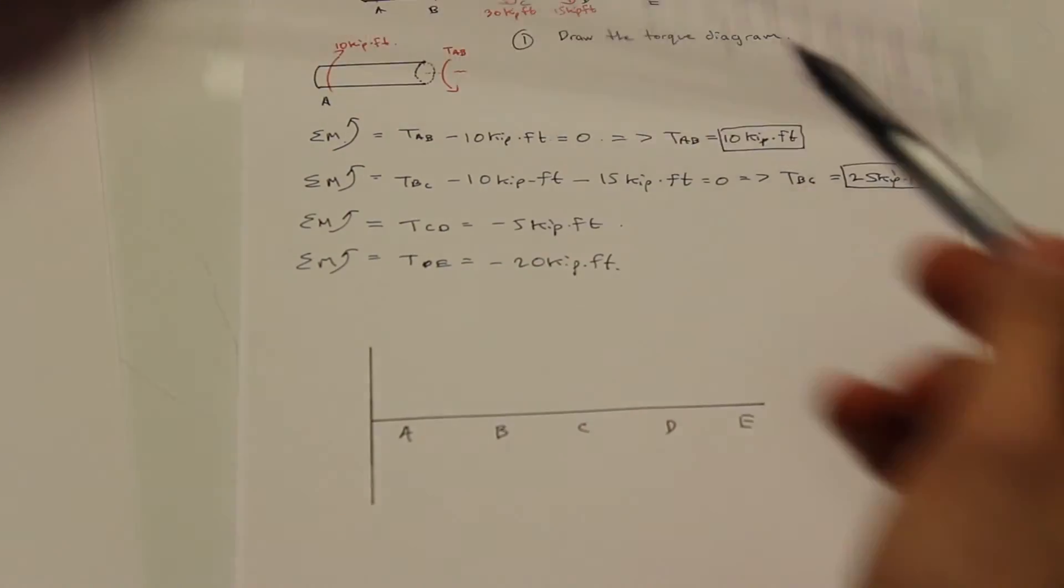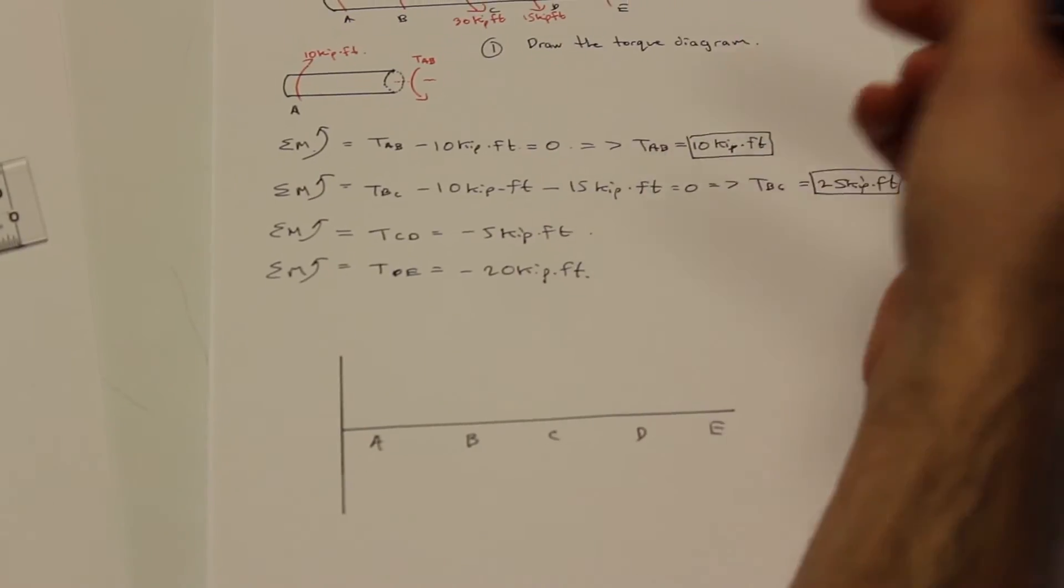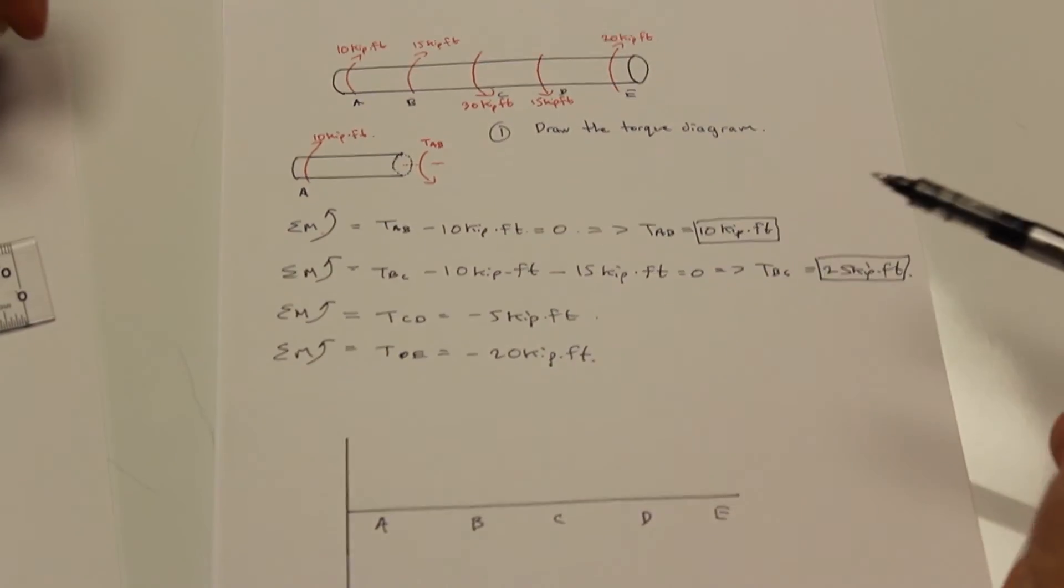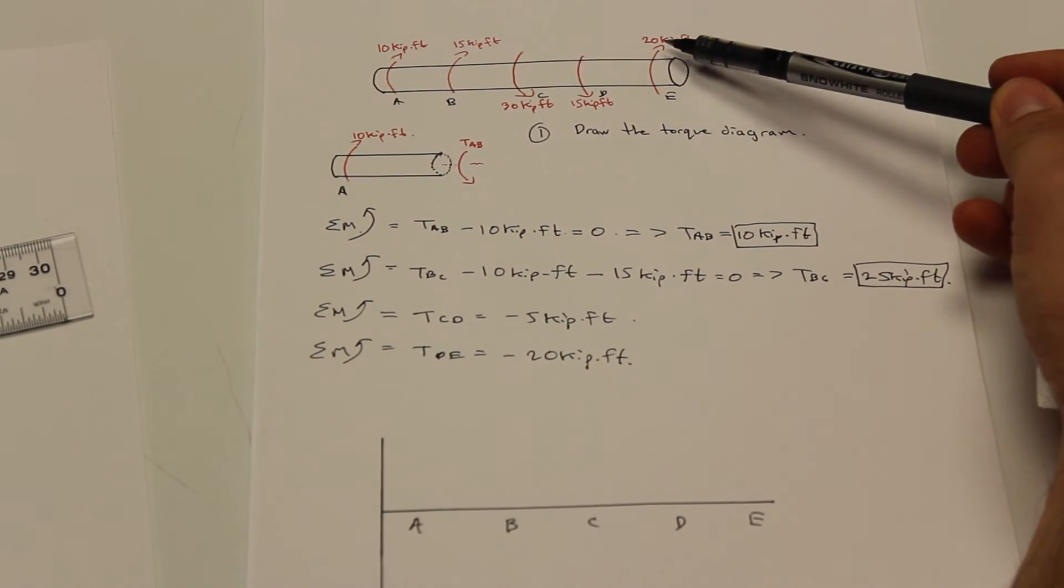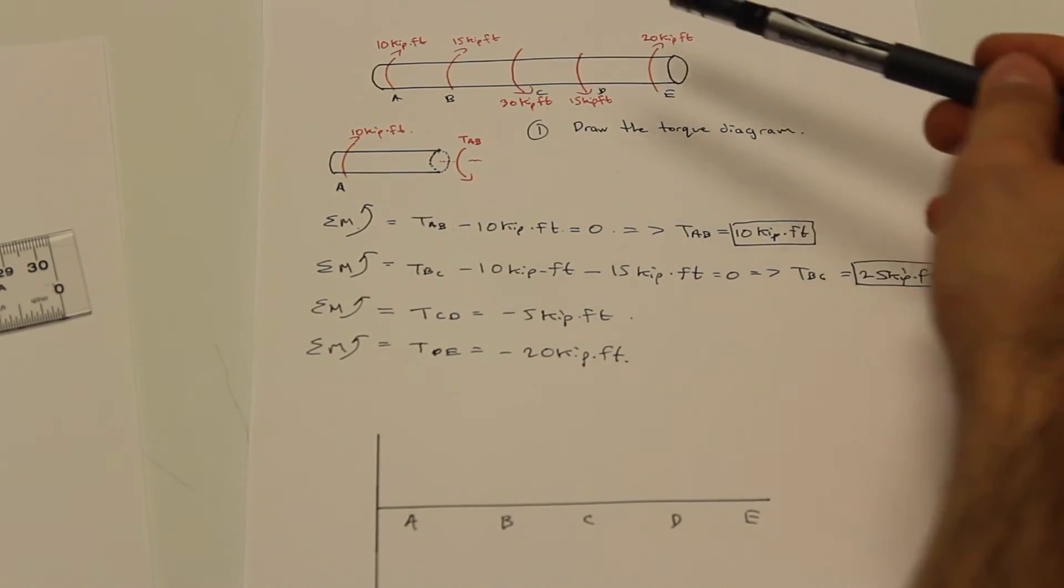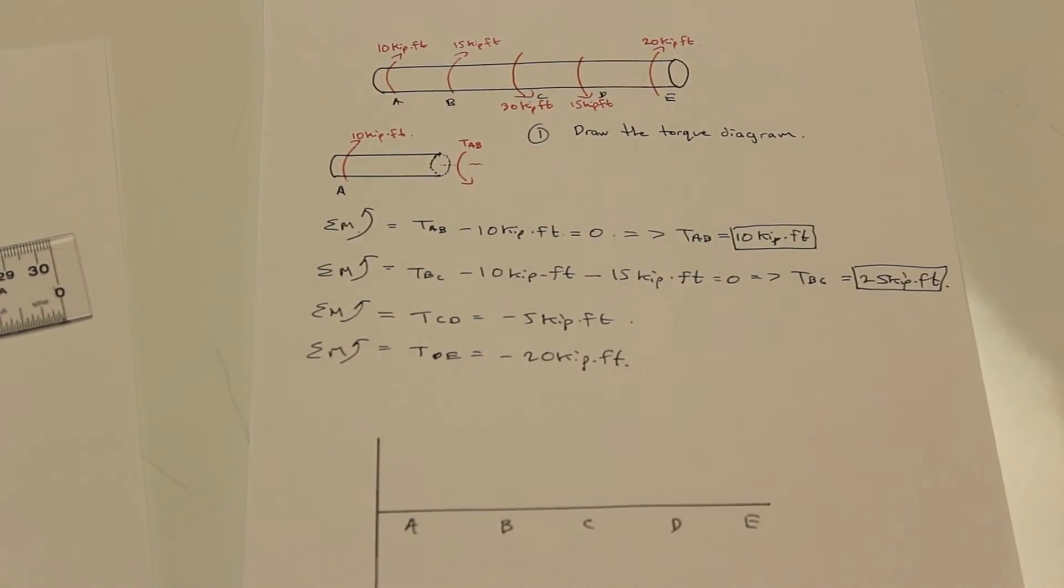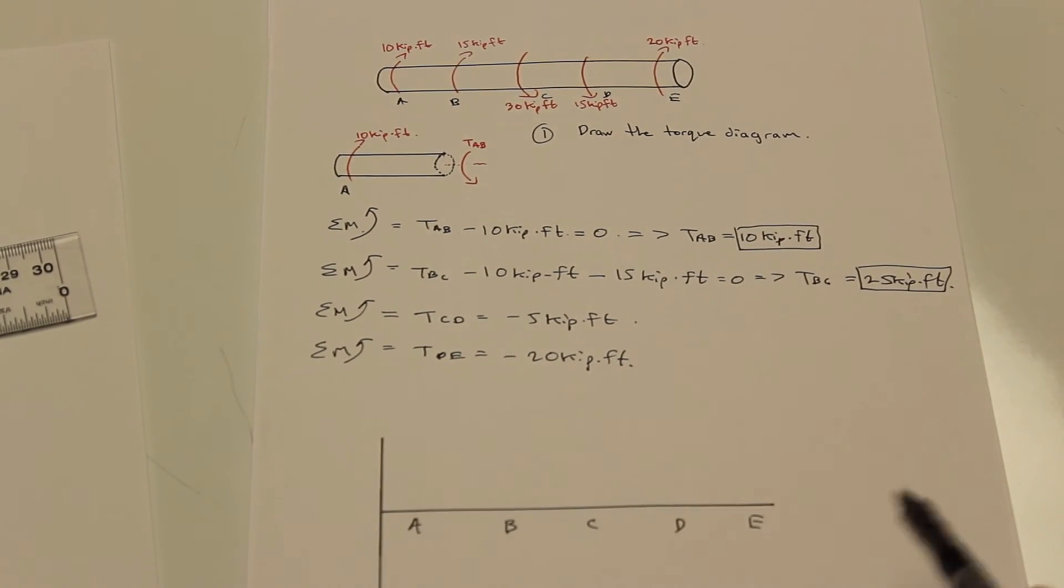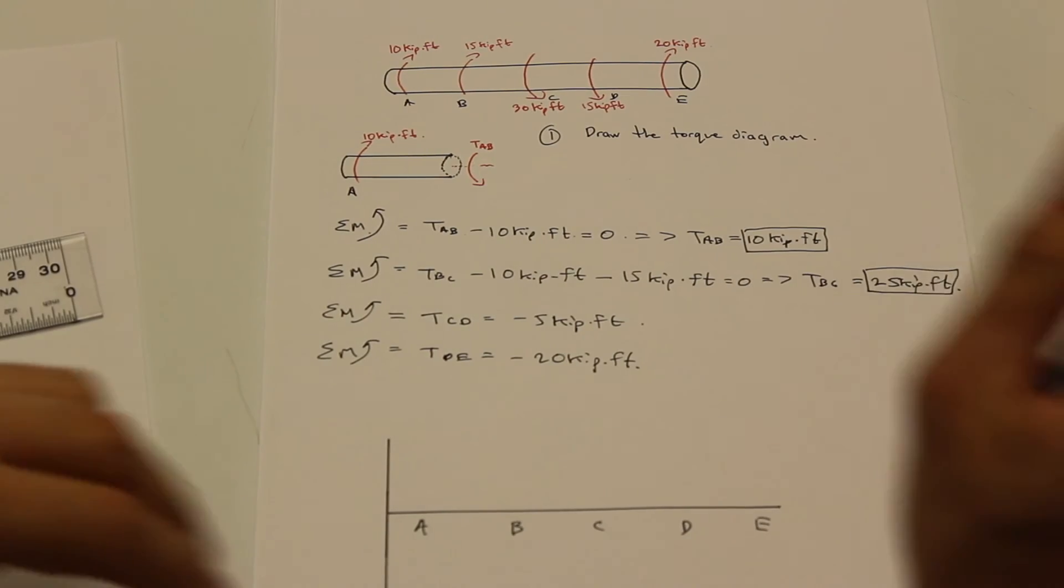So essentially what this is, is a representation of the internal torques inside the beam. For example, if the question asks you to solve for something like the angle of twist, which we're going to do next, you can't just take these external forces. You need to use the forces that are acting inside the beam that are resisting these external forces with these external moments. And that's what the torque diagram represents. And this is very important in this entire section. You're going to have to know how to draw the torque diagram every time.